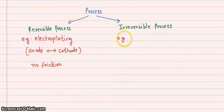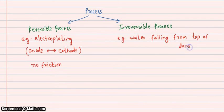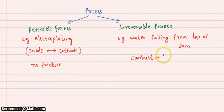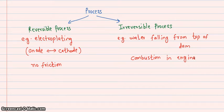Now, what are irreversible processes? For example, water falling from the top of a dam — it is an irreversible process. Water is coming from a hilly area and falling into the dam, and it is an irreversible process. Another example: combustion happening in a cylinder, or engine combustion — again it is an irreversible process. You have a fuel, you burn it, it produces gas, but you cannot get the fuel back. So it is irreversible.